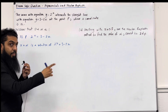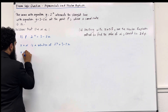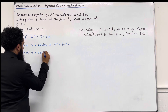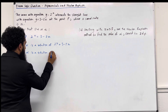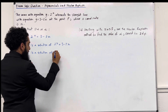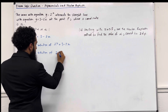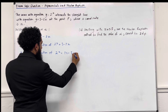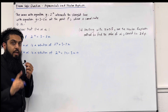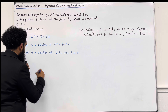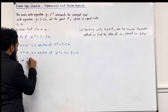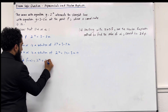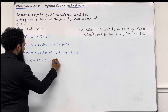This then implies that x equal alpha is a solution of — taking everything to the left-hand side — 2 to the power x plus 2x minus 3 equal to 0. Now I'm going to let F of x equal 2 to the power x plus 2x minus 3.